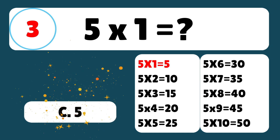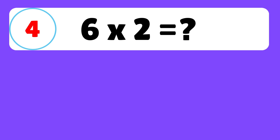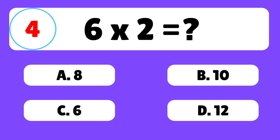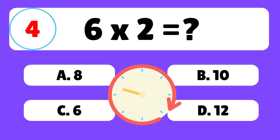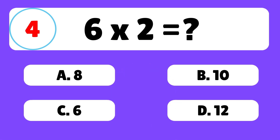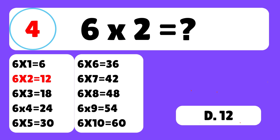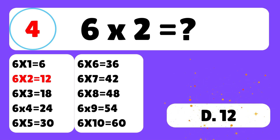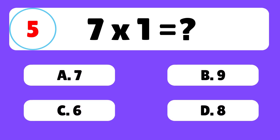Question three: what is five times one? The answer is C — five times one is equal to five. Question four: what is six times two? The answer is D — six times two is equal to twelve.